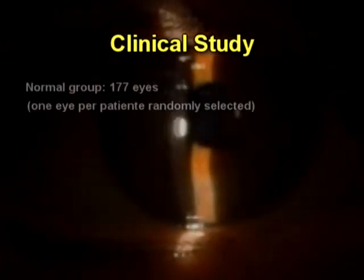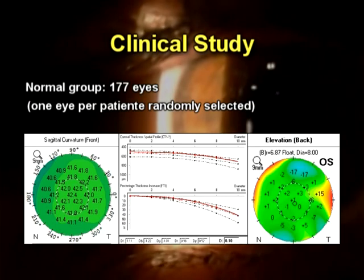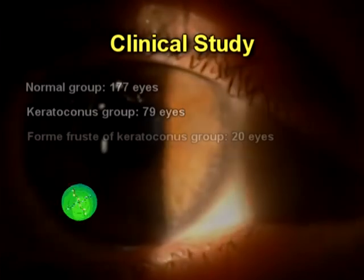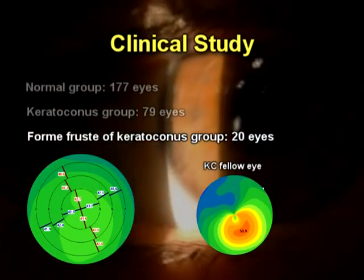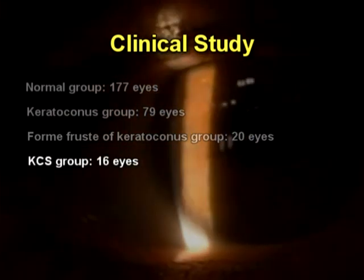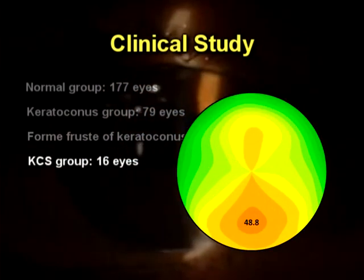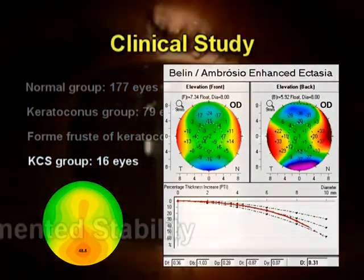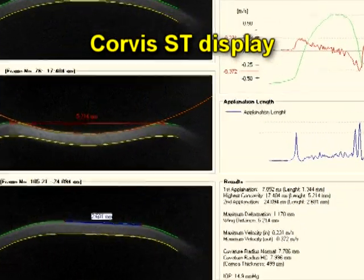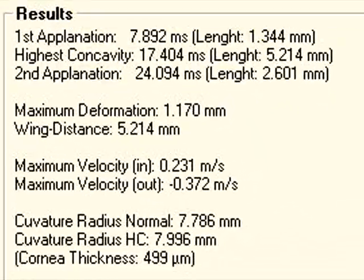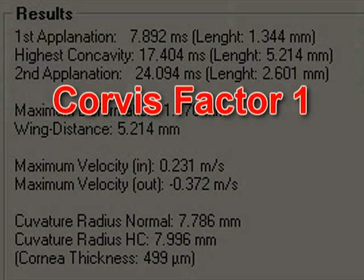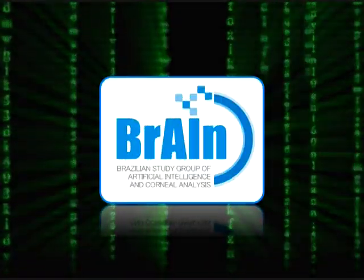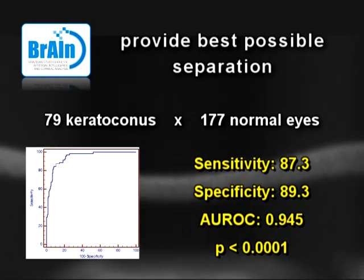A clinical study involved one eye randomly selected from 177 patients with tomographically normal corneas, 79 patients with bilateral keratoconus, 20 eyes with normal topographic patterns from cases with very asymmetric keratoconus, and 16 eyes from 16 patients with topographic patterns suspicious of keratoconus, called group KCS, but with documented stability and normal tomography. The intraocular pressure, applanation, and deformation responses were extracted from the Corvis data. Corvis Factor 1 was calculated from the combination of these parameters using linear regressions in order to provide best possible separation of keratoconus and normal subjects.